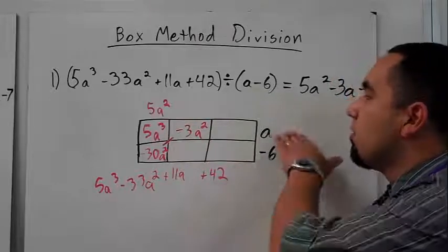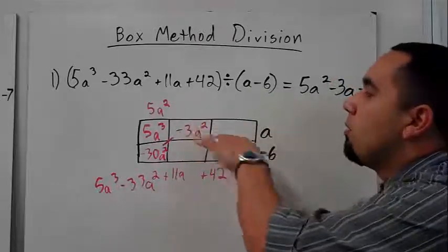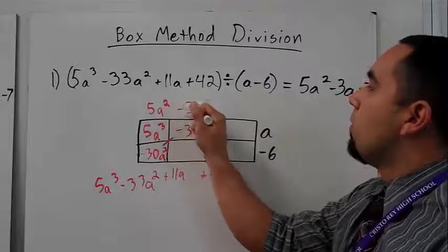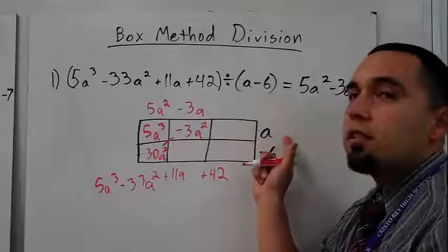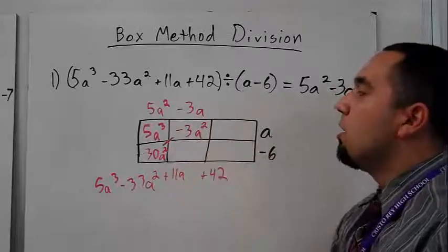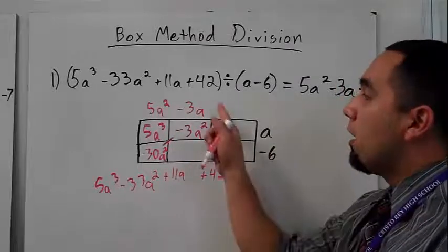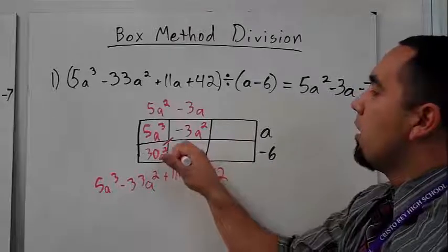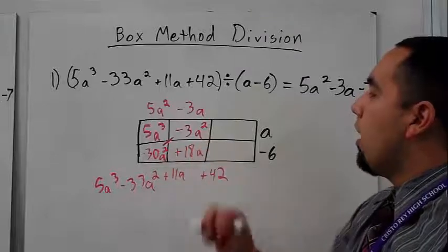And again, look, now I can figure out what my outside box is. I know that my outside box, or my answer up here, should be negative 3a, because negative 3a times a gives me negative 3a squared. Again, now I can fill in this box, because I have my two outside numbers. I get positive 18a.